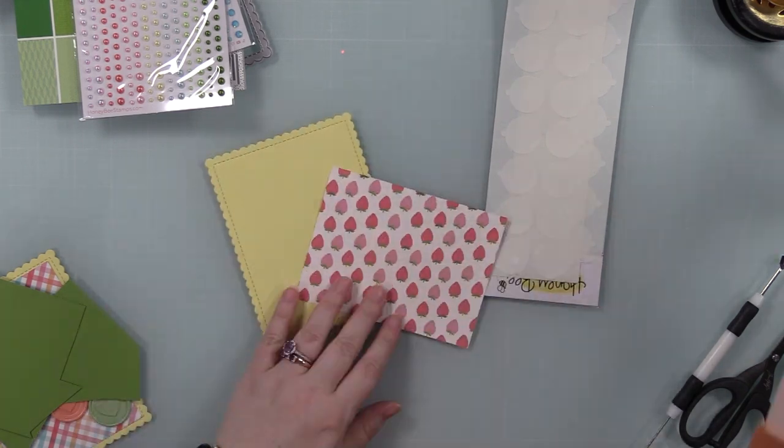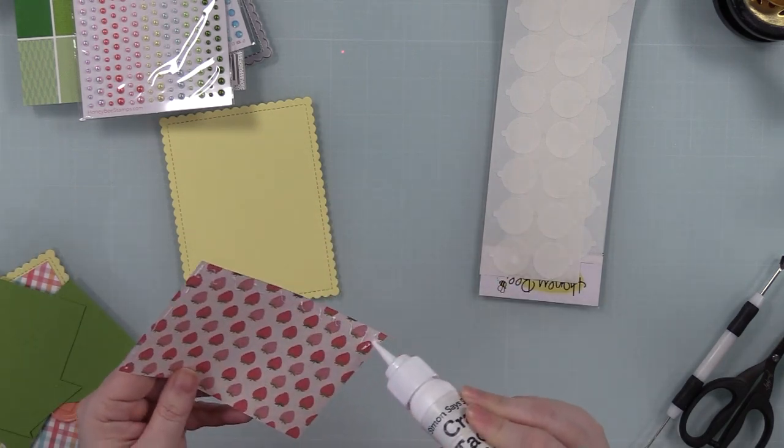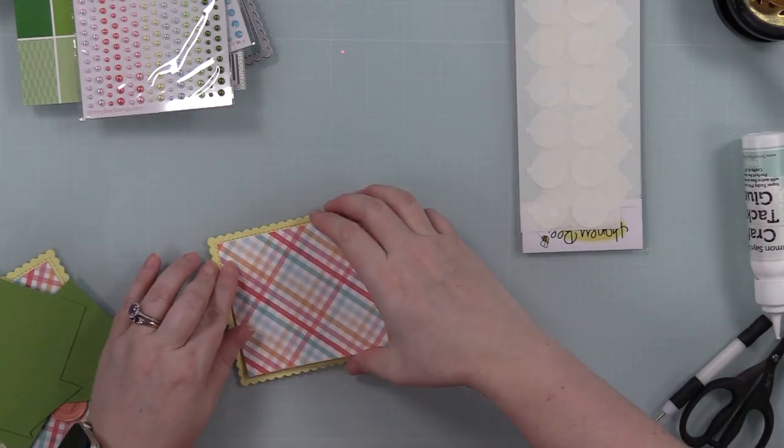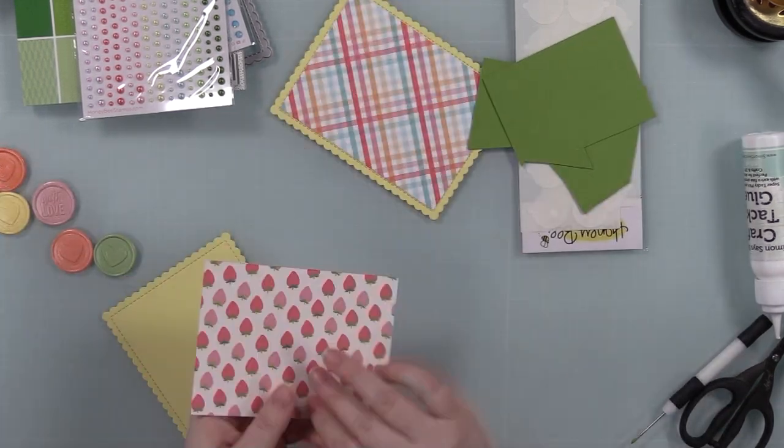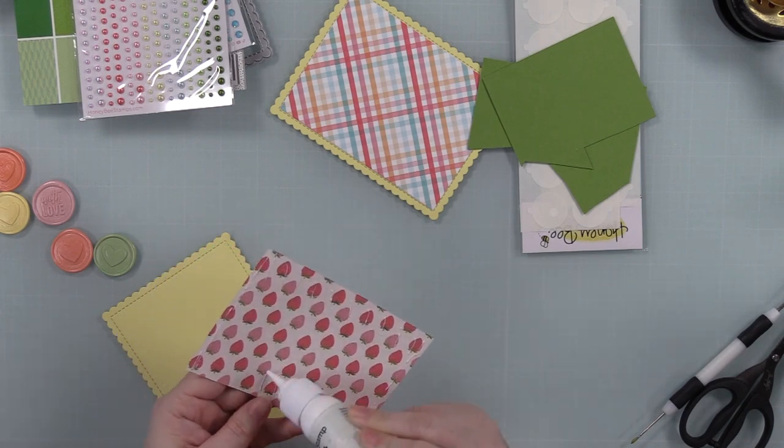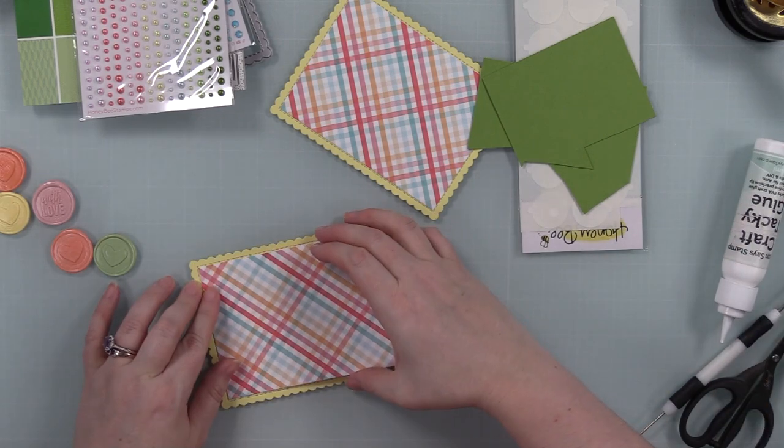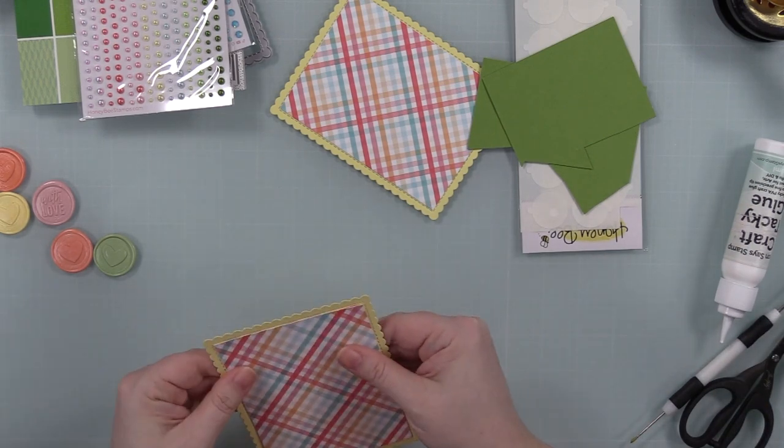So once I was done creating a bunch of my little wax seals, I die cut some lemon chiffon cardstock with one of Honey Bee's scalloped A2 rectangle wafer dies. And then I pulled out some pattern paper. I'm actually using some of it. I hoard Honey Bee's pattern paper because I love it.